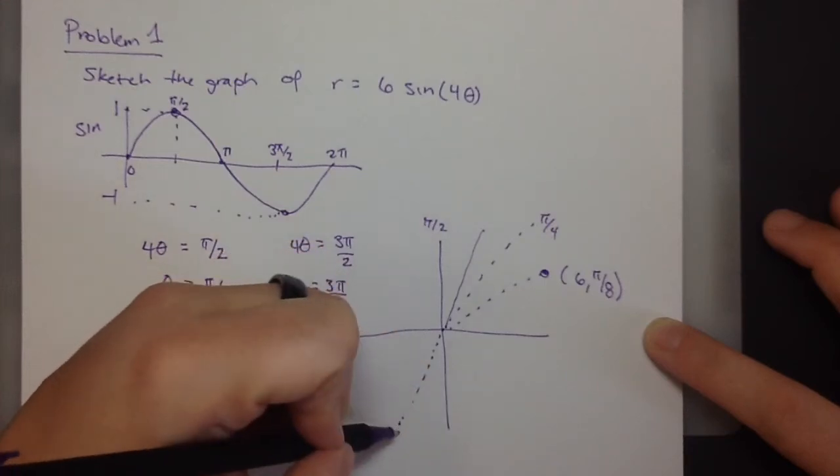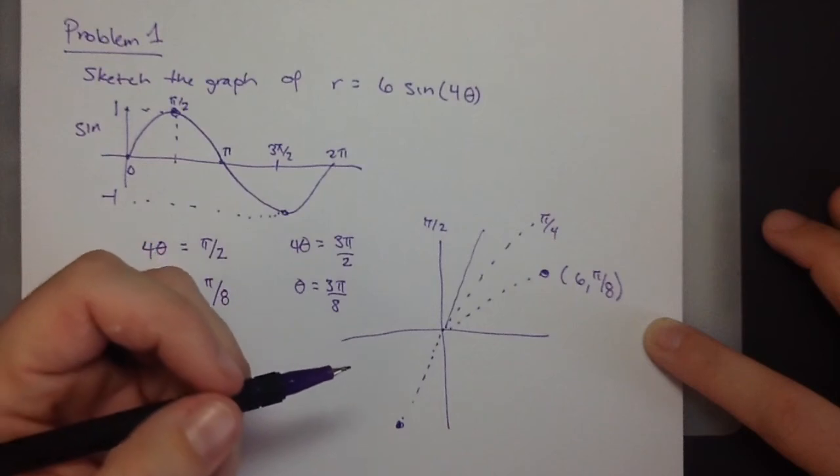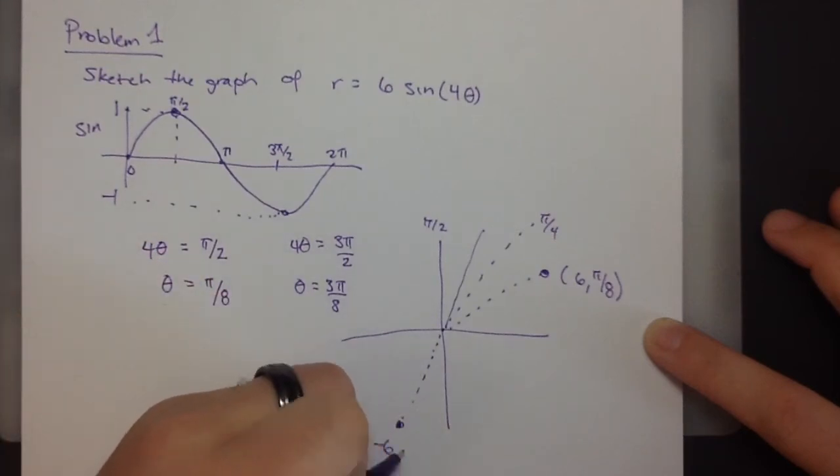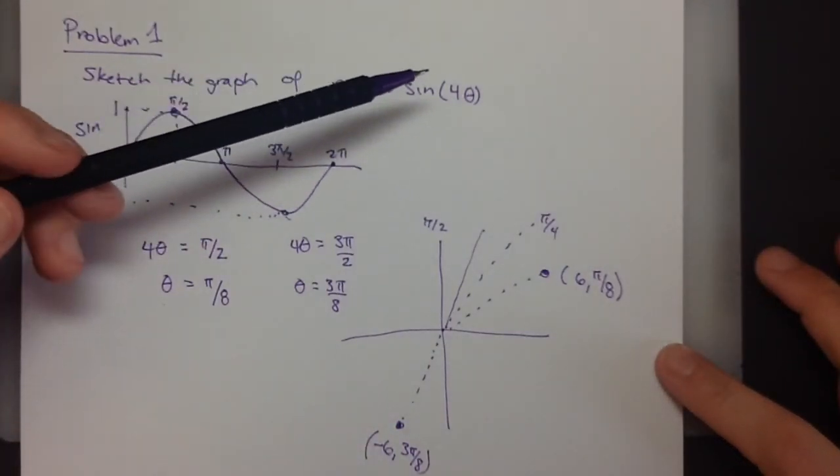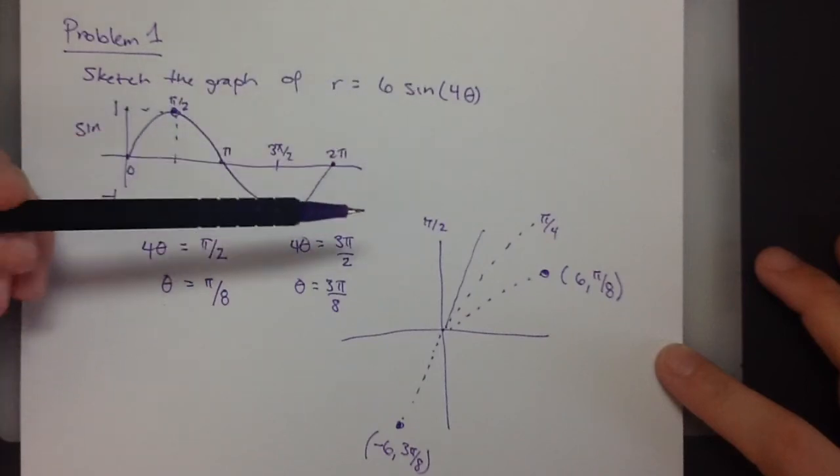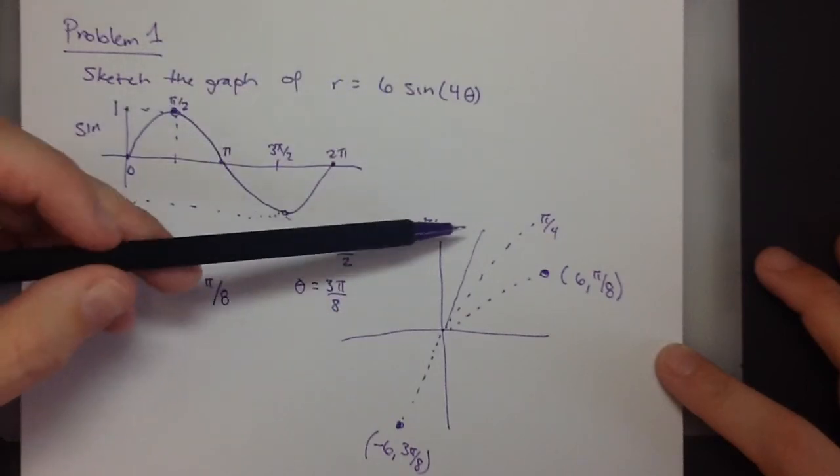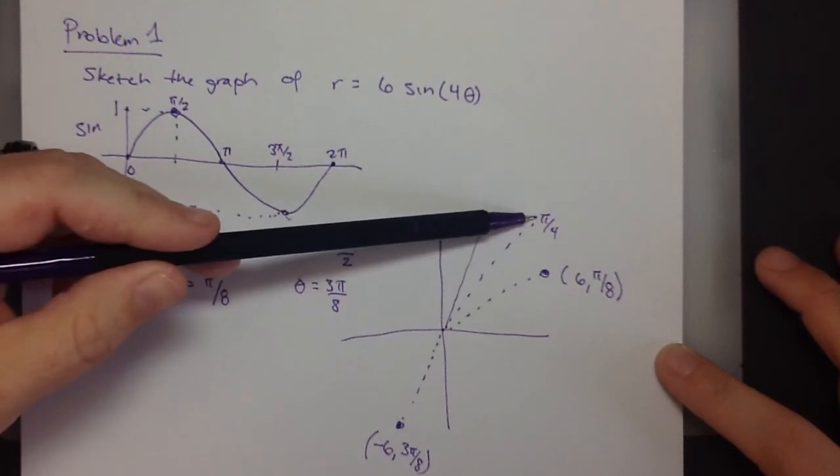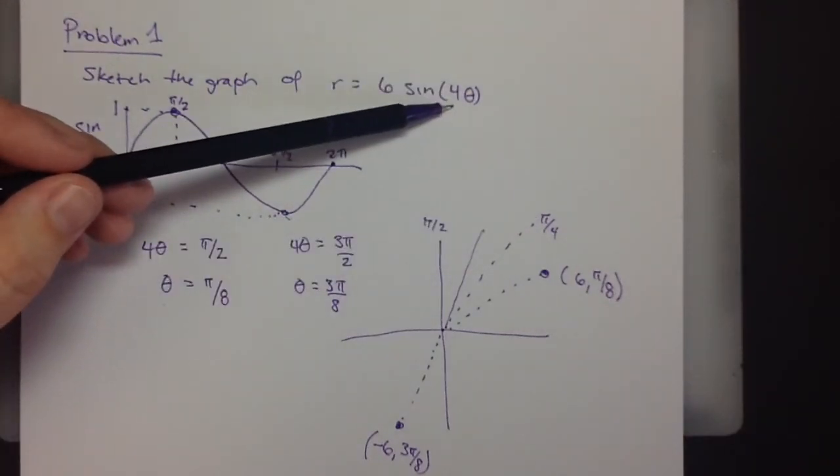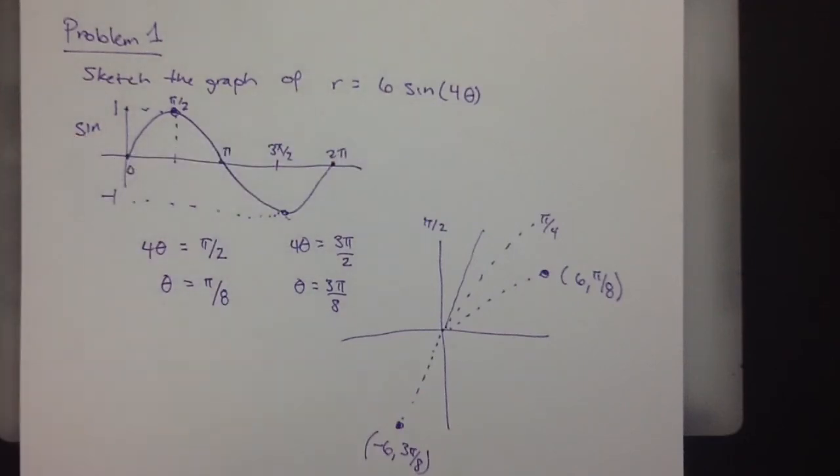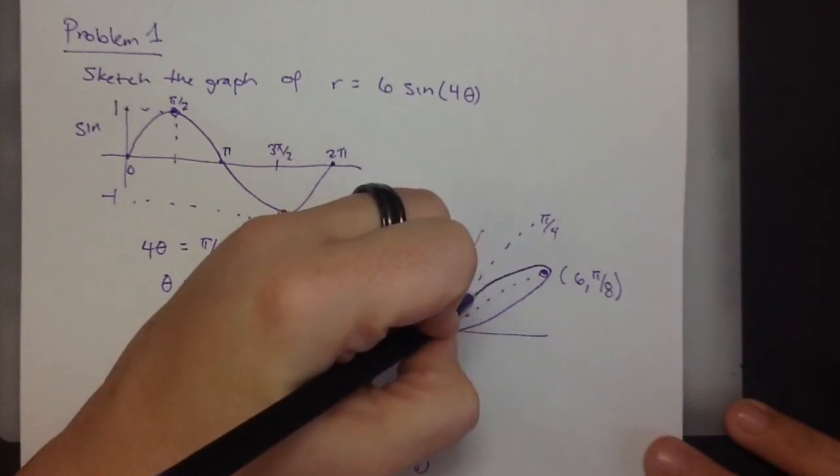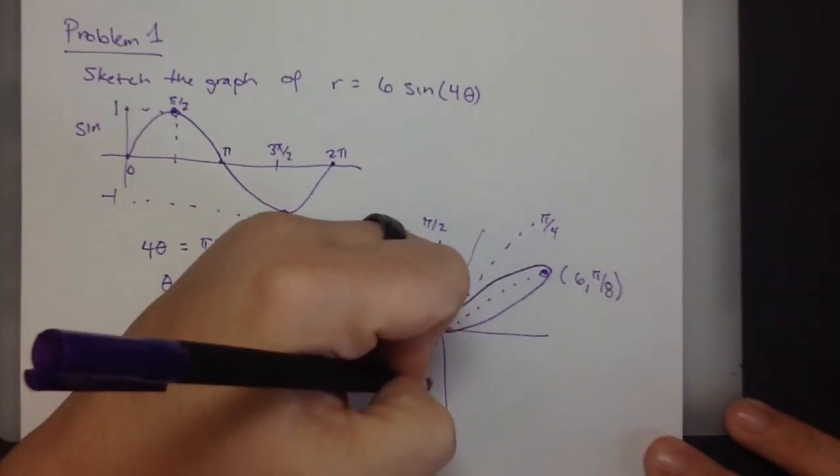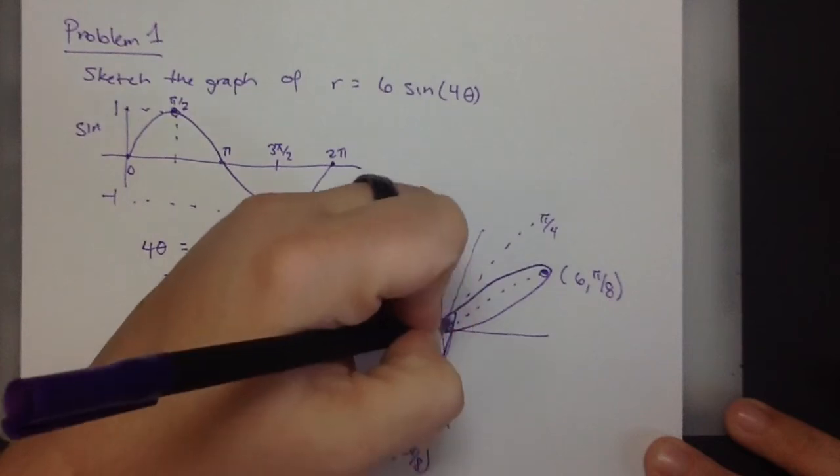So, this is negative 6, 3 pi over 8. Coming back around, we've got 2 pi. So, when theta is pi over 4, so pi over 4 goes into here, and we've got pi, which will be 0. So, this should be 0. So, we've got something like this so far.